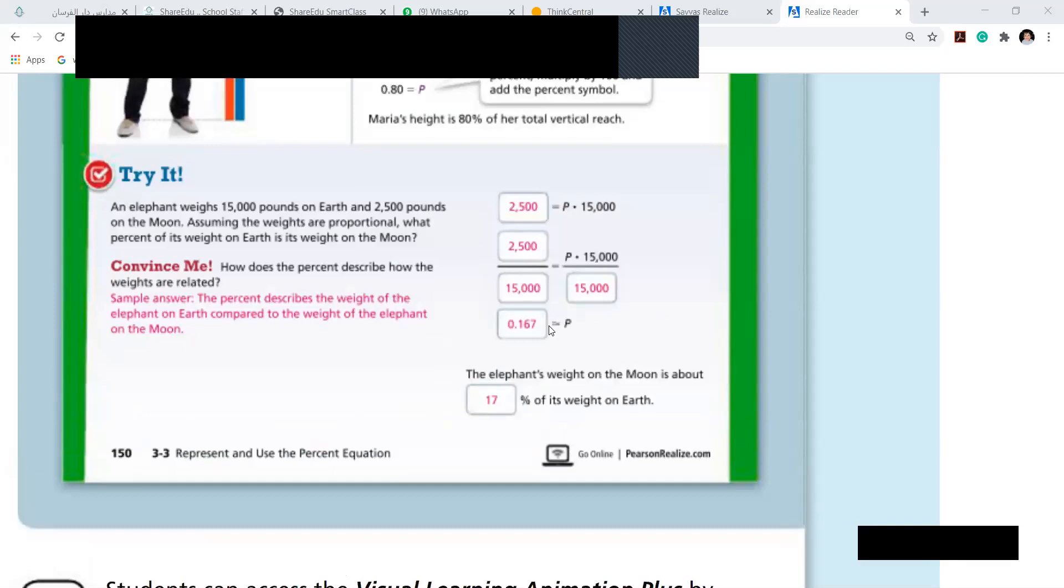An elephant weighs about 15,000 pounds on Earth and 2,500 pounds on the moon. Assuming the weights are proportional, what percent of its... again they're asking you the percentage, girls. So let us do the rough work. Don't panic by looking at these numbers. On the moon, on the Earth, he weighs 15,000, and on the moon it's 2,500. Of course we'll do the small one up.